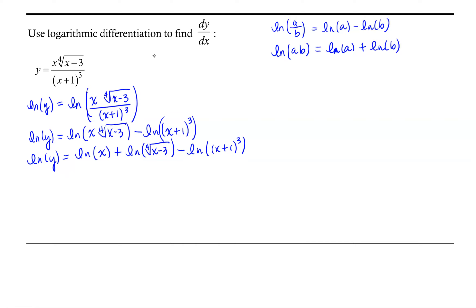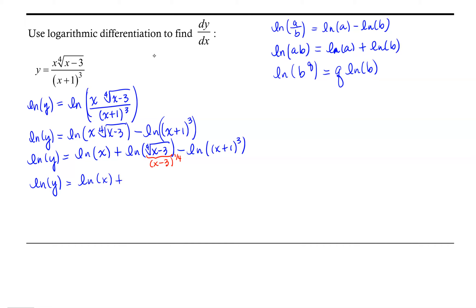Before we go on, let's remind ourselves that the fourth root of x minus 3 can be rewritten as x minus 3 to the one-fourth power. Now let's use the property of logarithms that says the natural log of b to the q power equals q times the natural log of b. So we get the natural log of y equals the natural log of x plus one-fourth times the natural log of x minus 3, minus 3 times the natural log of x plus 1.